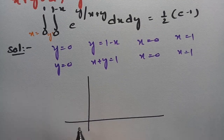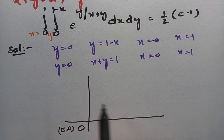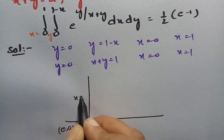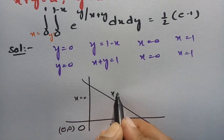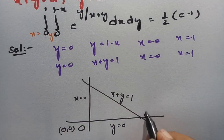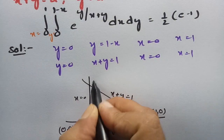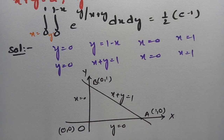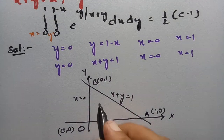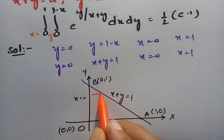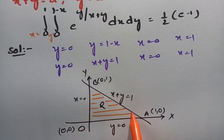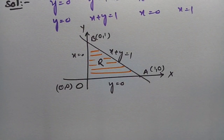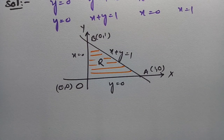Drawing the figure: the origin is at (0,0). The line y equals 0 is the x-axis, x equals 0 is the y-axis, and x plus y equals 1 is a straight line with points (1,0) and (0,1). This enclosed triangular area is the region R. We need to transform this into the new coordinate form using the given equations.